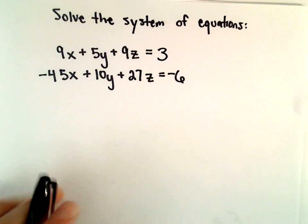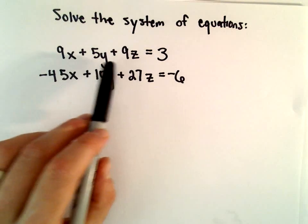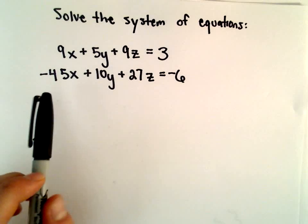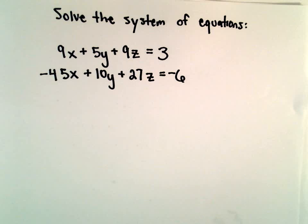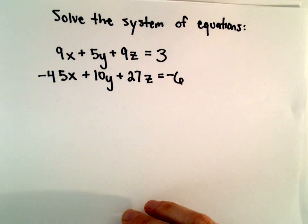Here we're going to solve the system of equations 9x plus 5y plus 9z equals 3, and negative 45x plus 10y plus 27z equals negative 6. We're going to solve this by using elimination by addition.